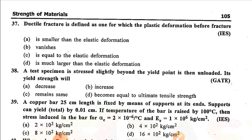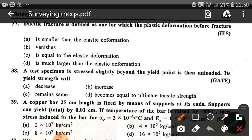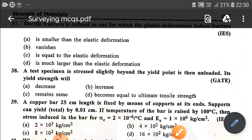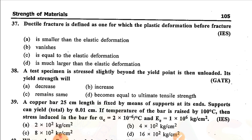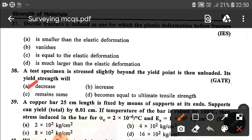Question number thirty-seven: Ductile fracture is defined as one for which the plastic deformation before fracture — option D is correct — is much larger than the elastic deformation. Question number thirty-eight: A test specimen is stressed slightly beyond the yield point and then unloaded; its yield strength will — the correct answer indicates an increase due to strain hardening.